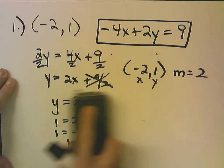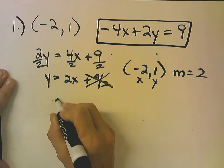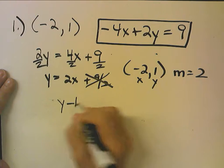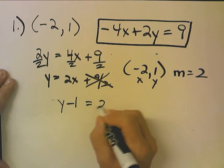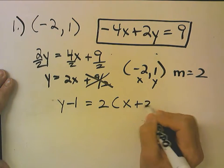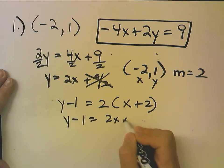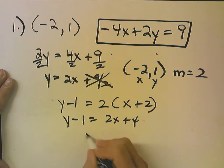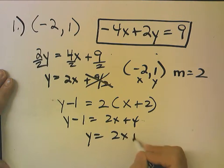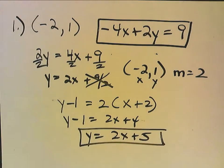Another way I could have done it is using the point-slope form. Y minus 1 equals 2 times (X minus negative 2), which is X plus 2. Y minus 1 equals 2X plus 4, so Y equals 2X plus 5. I did it two different ways and got the same answer: Y equals 2X plus 5.